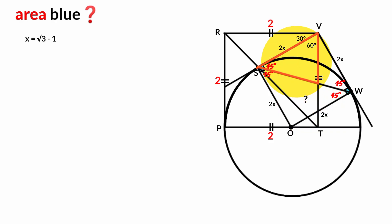Looking at this triangle, two of its angles are 45 degrees and 60 degrees. By the angle sum rule: 180 minus 45 minus 60 = 75 degrees for the third angle.